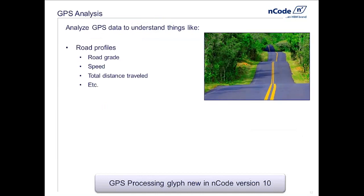For example, we can use GPS data to understand things like what's the road like. From GPS data we can calculate distance traveled, speed, and average speed for the whole trip. If we have GPS latitude, longitude, and altitude, we can calculate road grade. That can be very useful because sometimes in the absence of road grade information, cars do funny things. On a steep hill, it makes sense to have a low speed and high engine load — that wouldn't make sense if the road were flat. Understanding road profile, trip distances, and so on helps us understand exactly how the vehicle is being used.